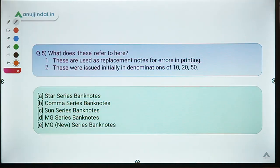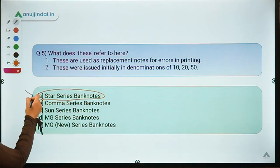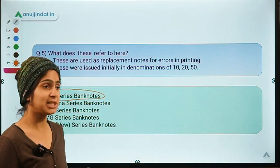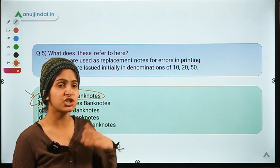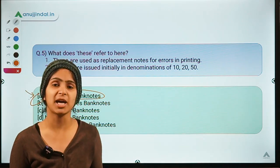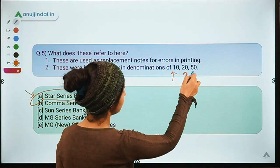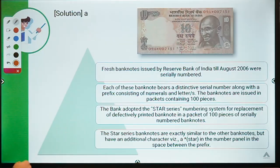The next question asks: what do these refer to? Two statements are given and you have to identify what they mean. The correct option is option A — Star Series Bank Notes. RBI publishes a huge number of notes, so there is a possibility of some printing errors. To replace bank notes that had printing errors, RBI introduced a new series called Star Series Bank Notes. These were initially issued in denominations of 10, 20, and 50 rupees — whichever note had a printing error would be replaced by a star series note.